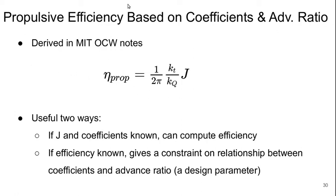And the propulsive efficiency can be rewritten to be based on these non-dimensional parameters. Again, this is derived in the MIT OpenCourseWare notes. What we end up with is the propulsive efficiency is just this constant, 1 over 2 pi, times the thrust coefficient over the torque coefficient times the advanced ratio.